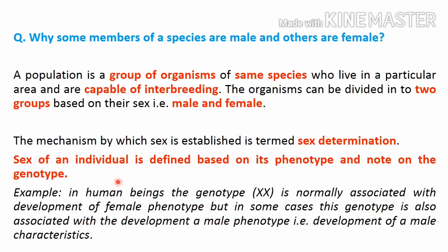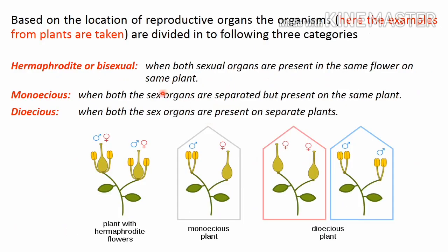As we know, the human female has the genotype XX, so this XX should develop into a female. However, it is also noted that the XX genotype can be associated with the development of male characters, which will be discussed later. Based on the location of reproductive organs, organisms are classified into three categories.